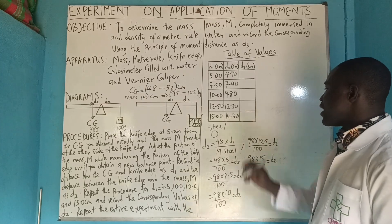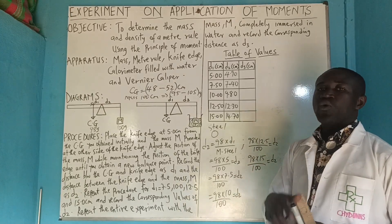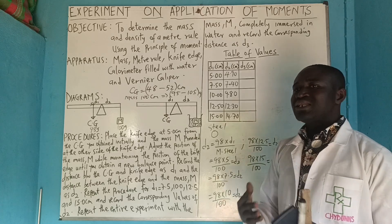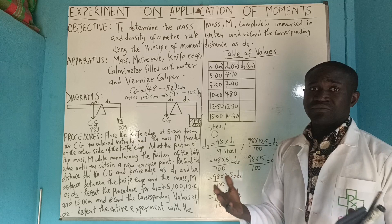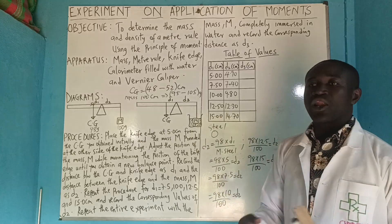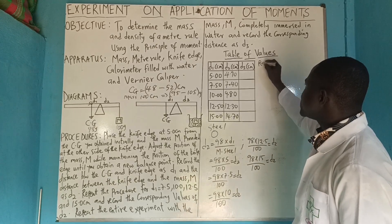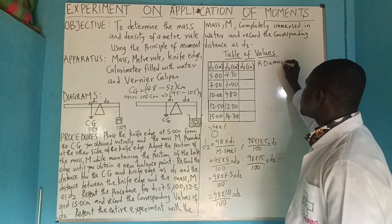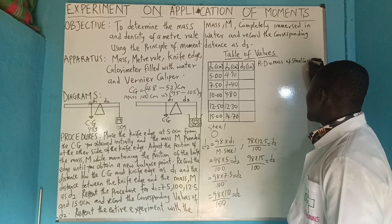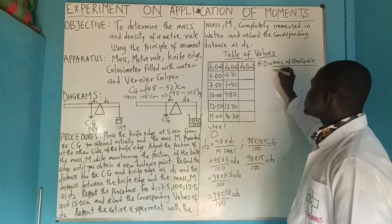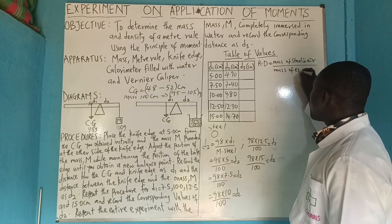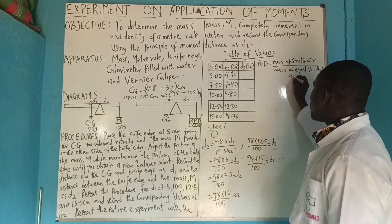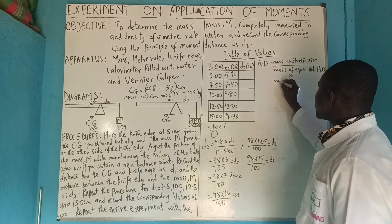How do we get our d3? D3 makes use of the mass immersed in water. There are a lot of things to consider here: relative density, density of thrust, and so on. The relative density of steel equals the mass of steel in air divided by the mass of an equal volume of water.